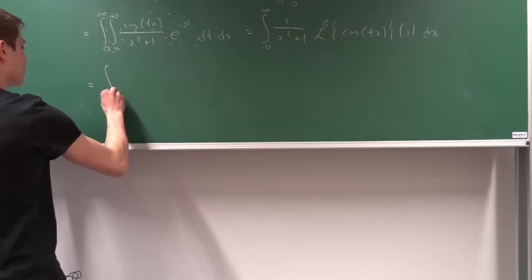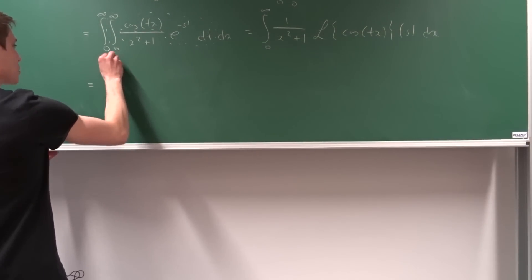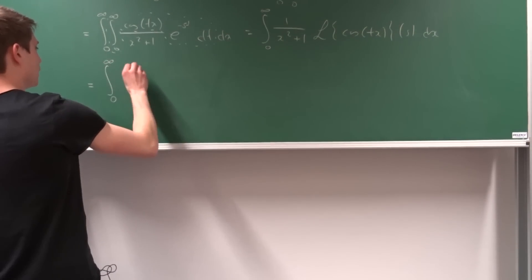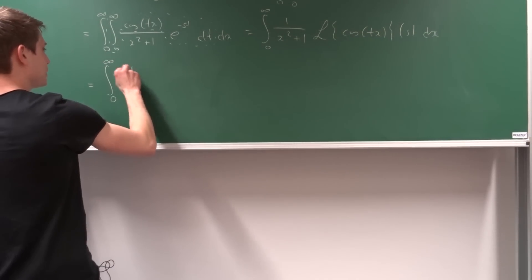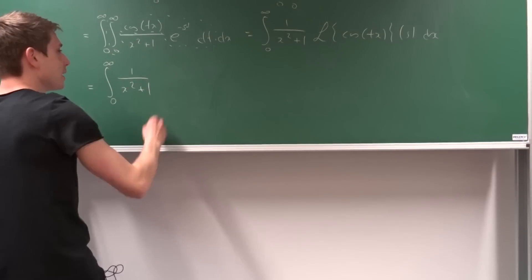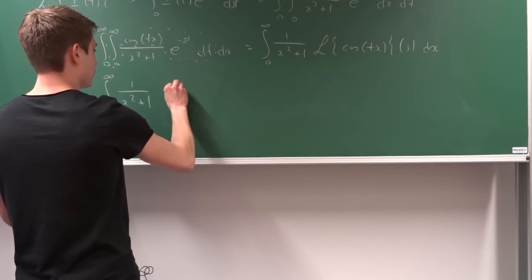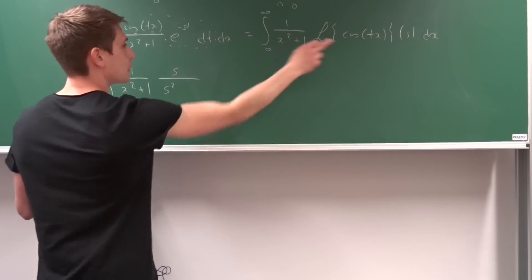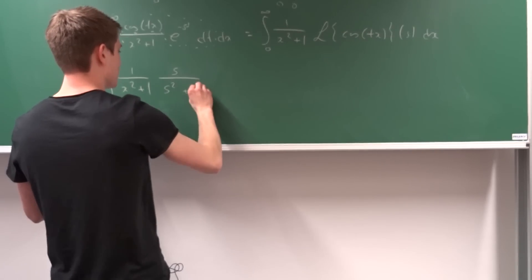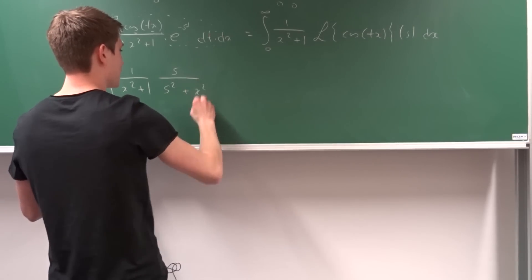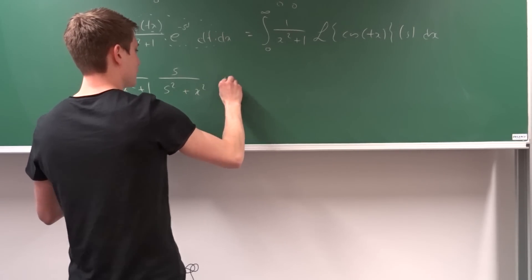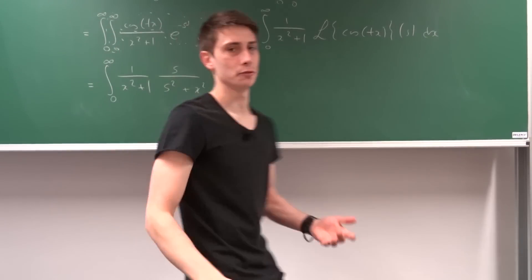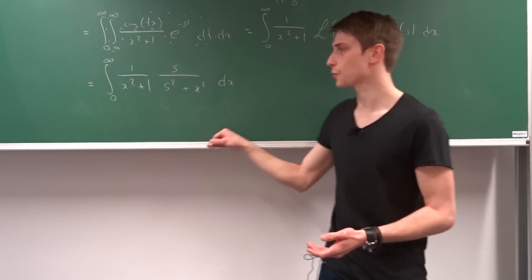What's the Laplace transform of cosine of t times x? That's quite easy — we've derived this before. So we now have the integral from 0 to infinity of 1 over x squared plus 1 times s over s squared plus x squared, dx. So we've applied the Laplace transform.